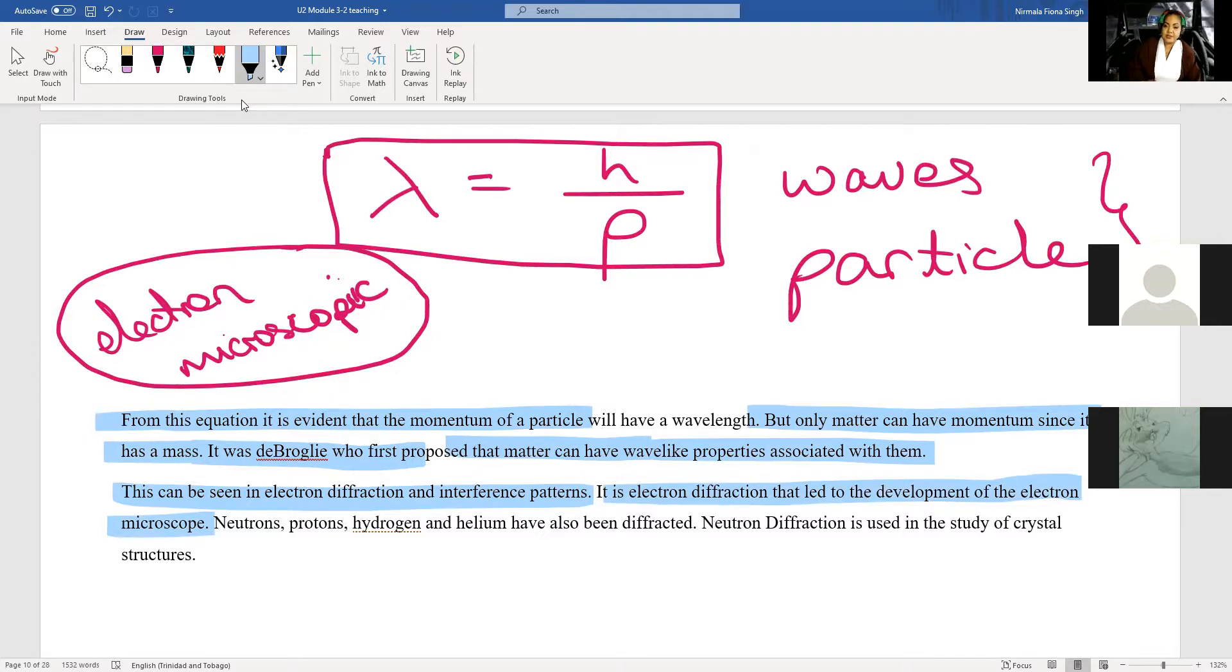So let's continue reading. From this equation, it was evidence that the momentum of a particle will have wave-like properties. Again, remember we live in an opposite world right now. When it comes to very, very small classical physics breaks down. Because things don't work the way they work at very small levels. Only matter can have a momentum since it has a mass. It was de Broglie who first proposed that matter can have wave-like properties associated with them. This can be seen in electron diffraction and interference patterns. So you all can look this up. They look exactly like regular interference patterns. We know what interference patterns look like. We know diffraction patterns look like. But they have diffracted and had interference with electrons. They've experimented with it and they've shown it. It is electron diffraction that has led to the development of the electron microscope. And beyond the electrons being used for microscopes, they've also realized that neutrons, protons, hydrogen, and helium can also be diffracted. So we can also diffract and observe wave-like properties of hydrogen and helium. Hydrogen and helium is matter. The very base foundation blocks of the universe have wave-like properties to it. Neutron diffraction is used in the study of crystal structures.